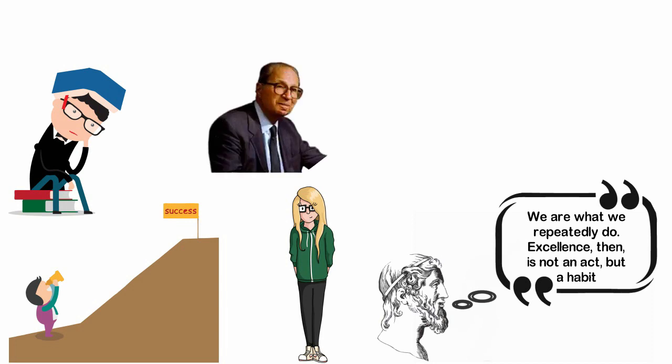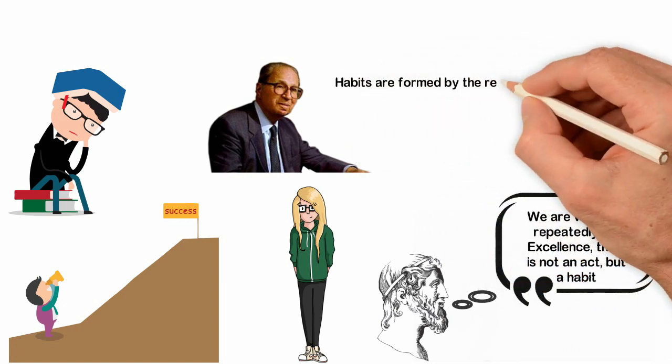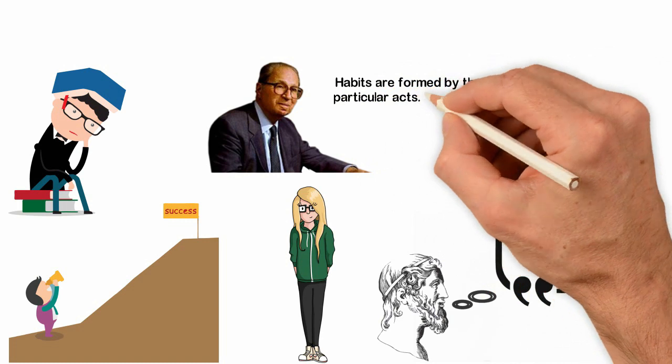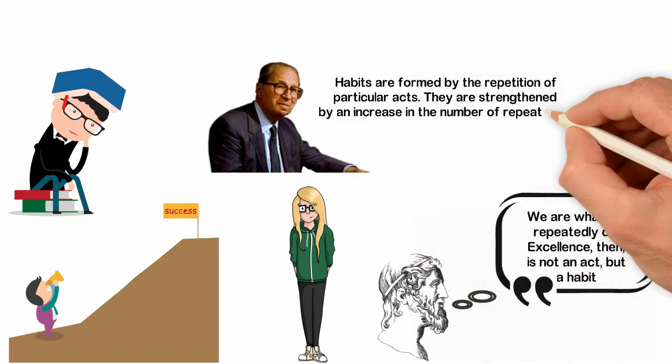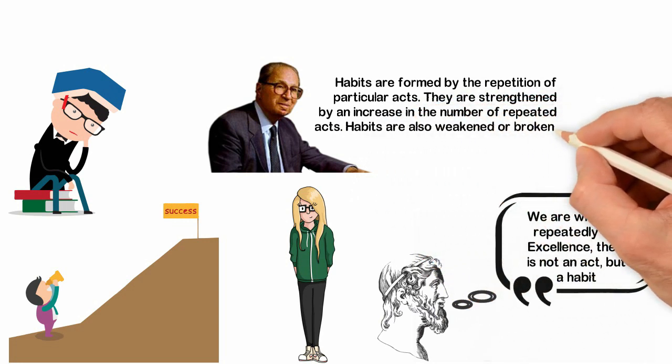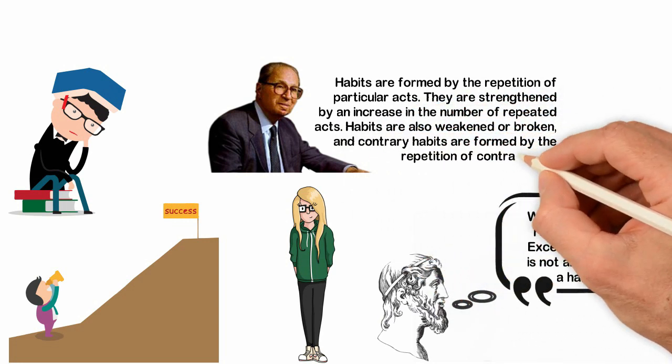Mortimer J. Adler, an American philosopher, educator and popular author, said, habits are formed by the repetition of particular acts. They are strengthened by an increase in the number of repeated acts. Habits are also weakened or broken and contrary habits are formed by the repetition of contrary acts.